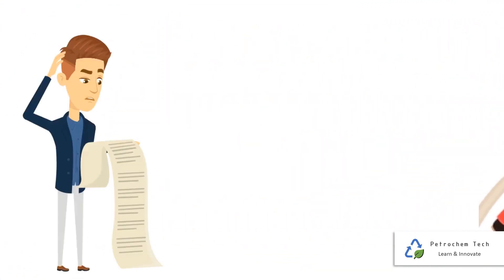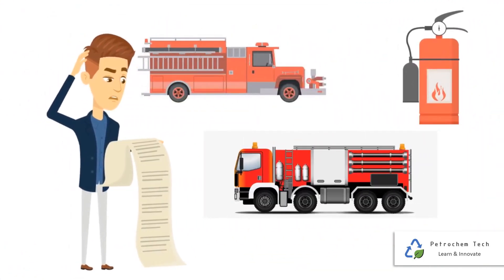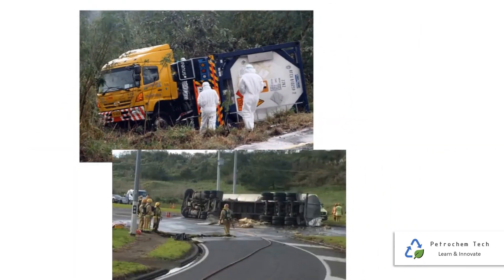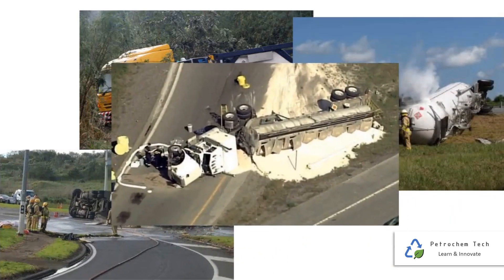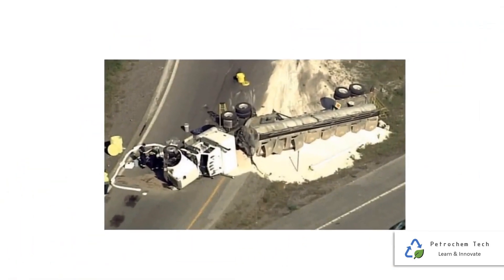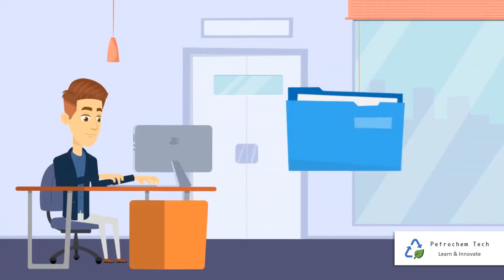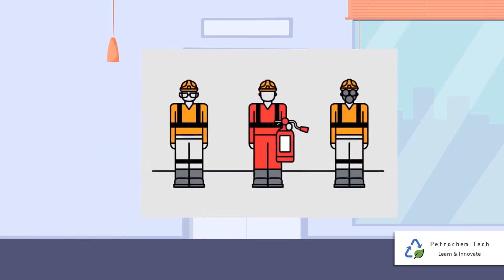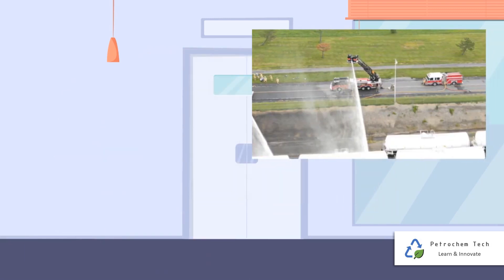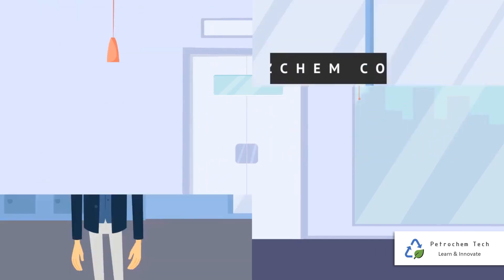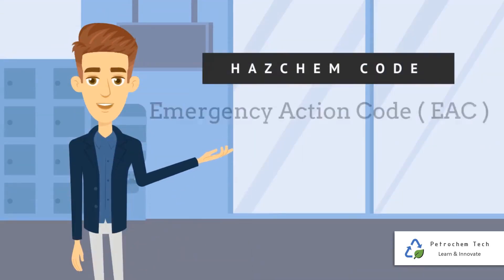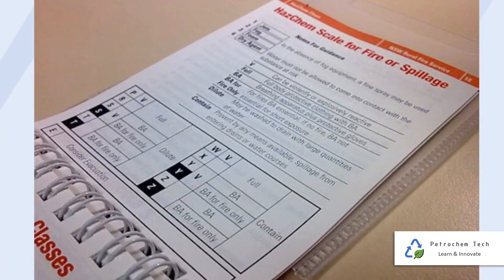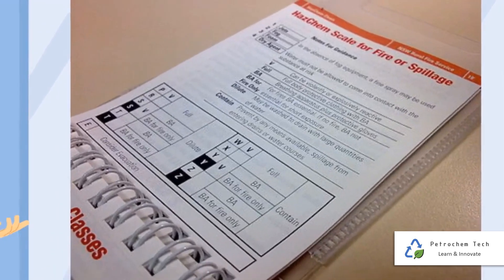Previously, firemen had no way of knowing what medium of extinguishment to use on unknown chemicals in a fire, spillage, or any emergency. Incorrect actions resulted in disasters. Availability of information on the hazardous nature of a substance and required control measures helps emergency management personnel to take quick and correct decisions. The Hazchem Code, also called Emergency Action Code, gives vital information to the Fire Brigade and other emergency services on the action to be taken.